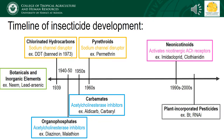In spite of documented cases of increasing resistance of harmful insect pests, it was over 30 years before a new class of insecticides was developed: the neonicotinoids. Plant-incorporated pesticides followed soon after, but given the recent narrative surrounding the effects of neonicotinoids on honey bees specifically, we'll focus on this group as a case study.